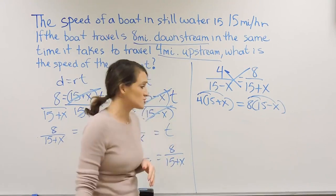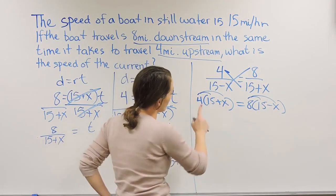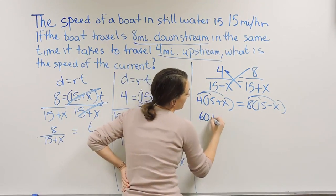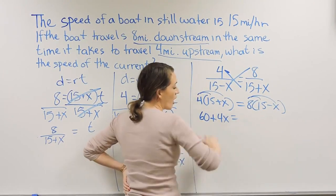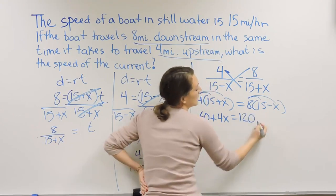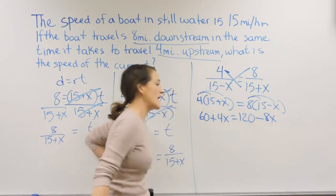We have two cases of the distributive property. On the left-hand side, we have to distribute by 4. So 4 times 15 is going to give me 60 plus 4 times X is 4X. On the right-hand side, 8 times 15 is 120. Minus 8 times X is 8X.